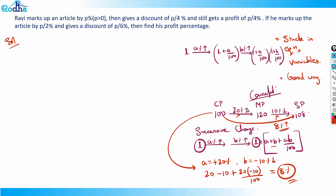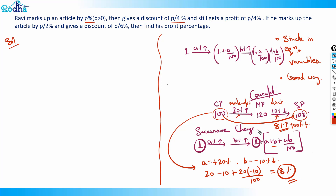The same logic applies to this problem. The successive change of markup percent and discount gives the overall profit or loss percentage. Here, markup is P percent so a = P, and discount is P/4 percent so b = −P/4. The overall profit is P/4 percent.